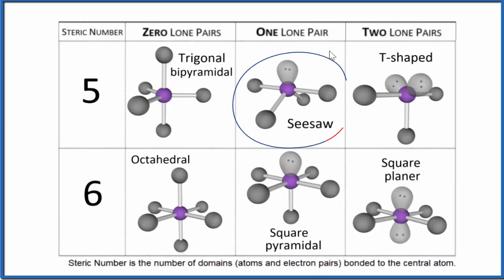Let's take a look at the seesaw molecular geometry, also called molecular shape. So for the seesaw molecular geometry, we have a steric number of five.